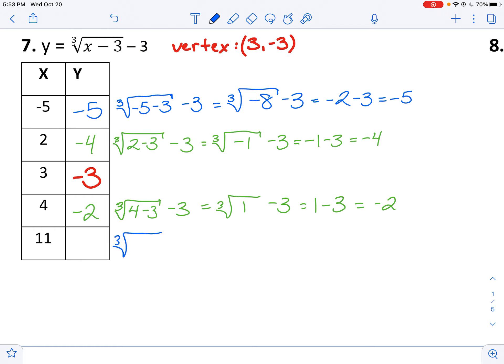And my last one here, cube root of 11 minus 3 minus 3. So the cube root simplifies to 11 minus 3 is just 8. Keep that minus 3 on the outside. And the cube root of 8 is 2 minus 3 gets you negative 1.